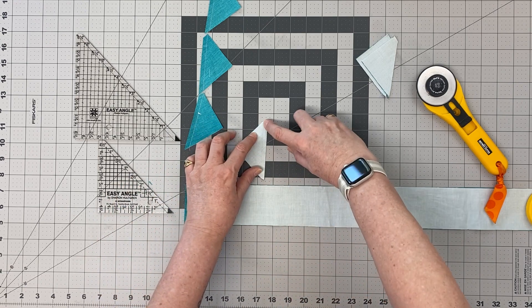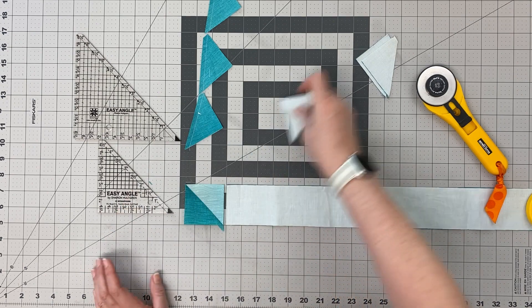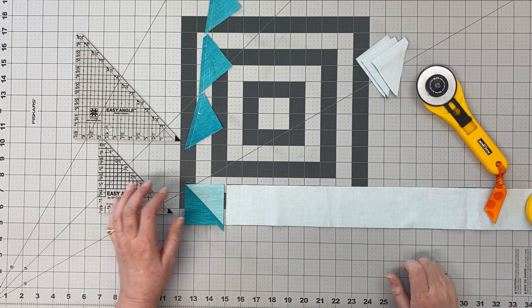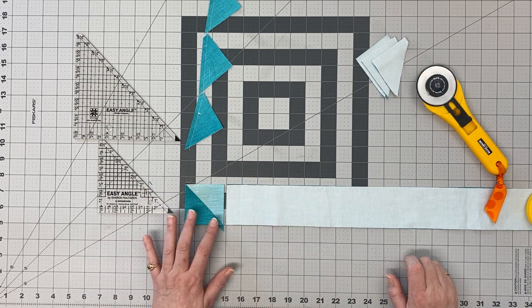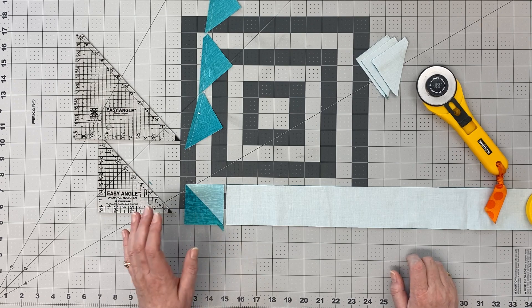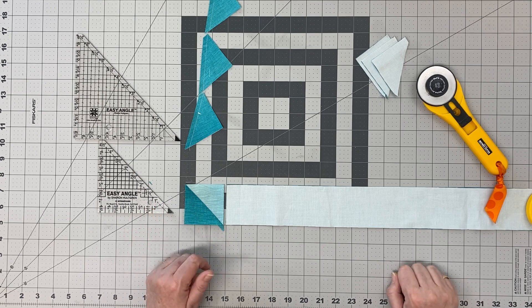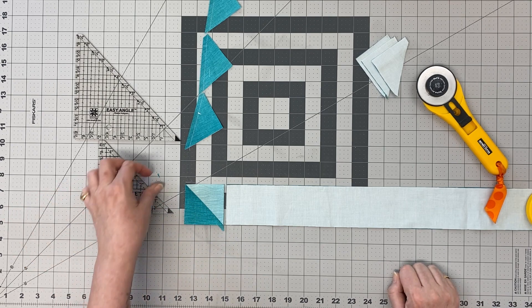that leads you into your accurate quarter inch seam. This method is good for you if you have a relatively accurate quarter inch seam. If you don't have a relatively accurate quarter inch seam, I recommend that you